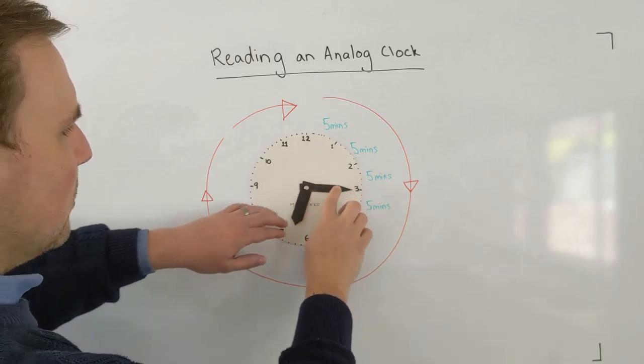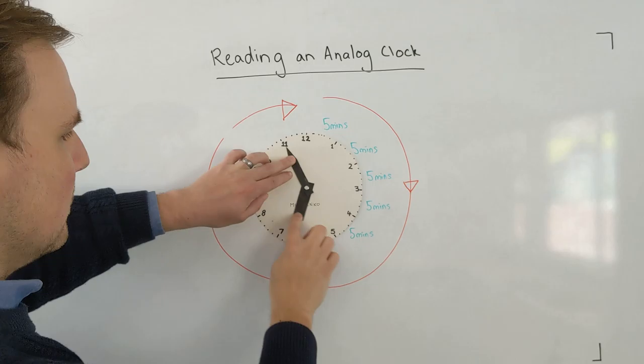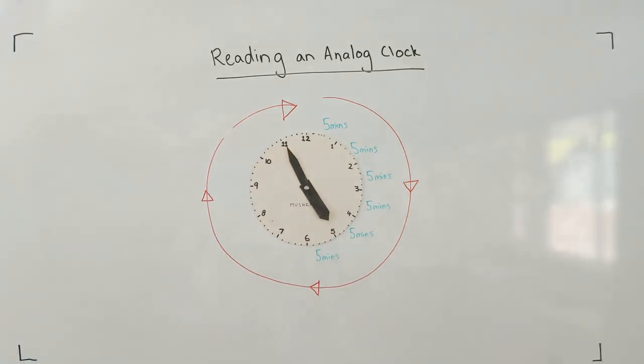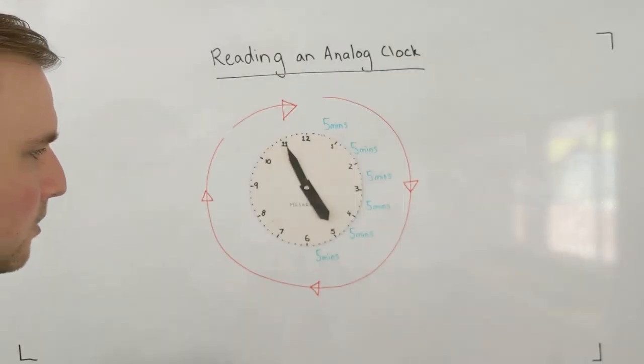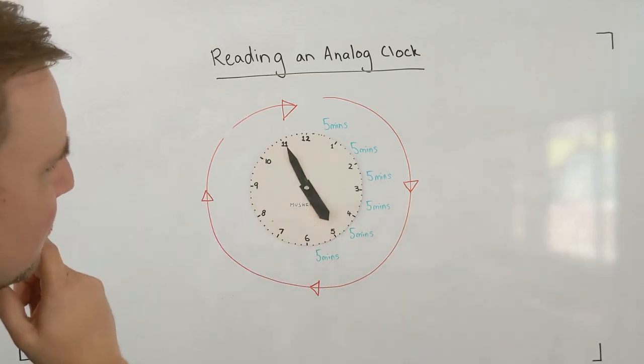Let's try one more example. Okay. Let's take a look at this starting with the hour hand, of course, first. The hour hand, it's kind of pointing at the five.